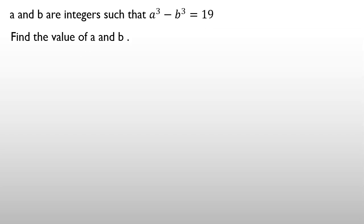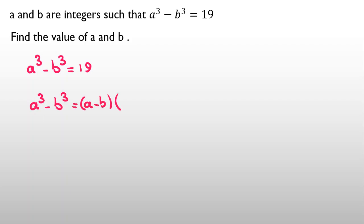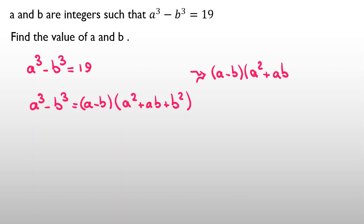For solving this problem, I write a³ minus b³ equal to 19, and we have a famous identity that a³ minus b³ equals (a minus b) times (a² plus ab plus b²). Combining these two things, we conclude (a minus b)(a² plus ab plus b²) equals 19, because the left-hand sides are equal.